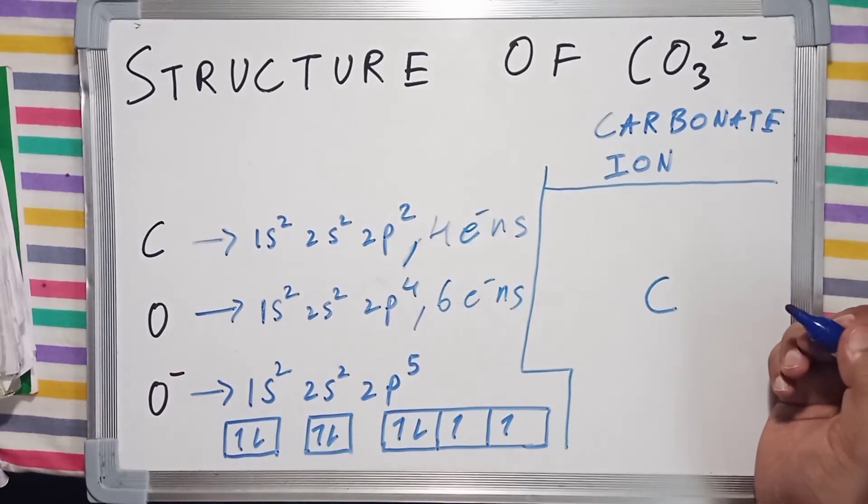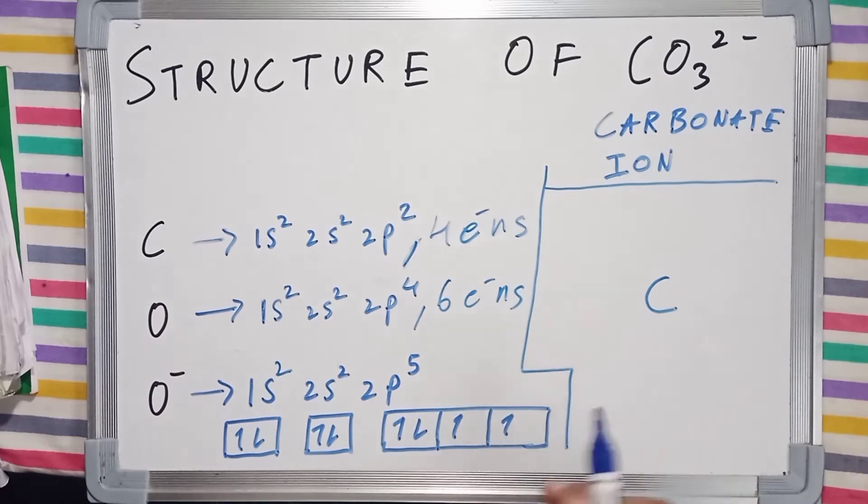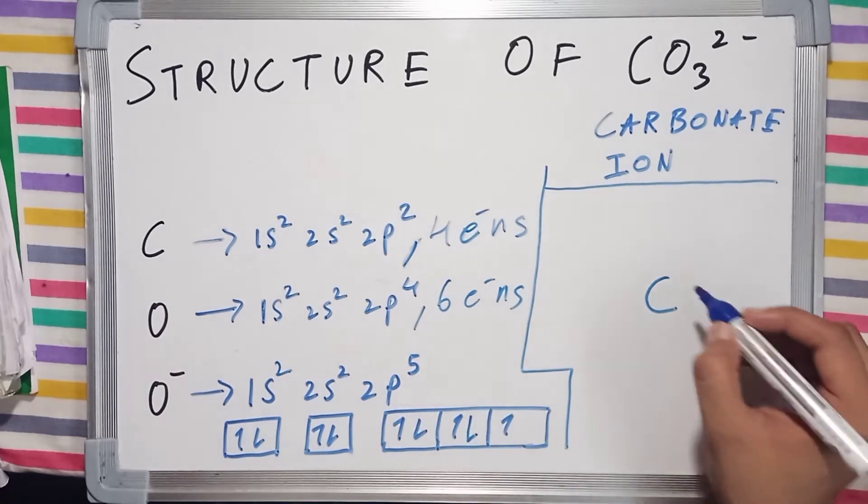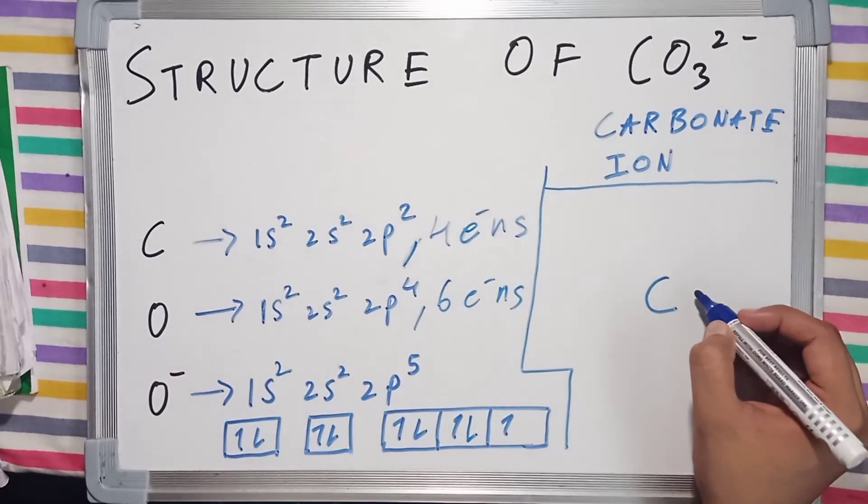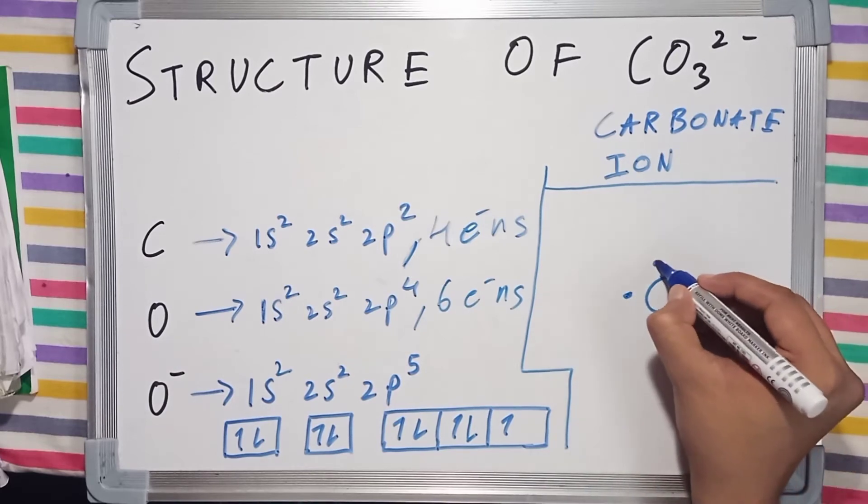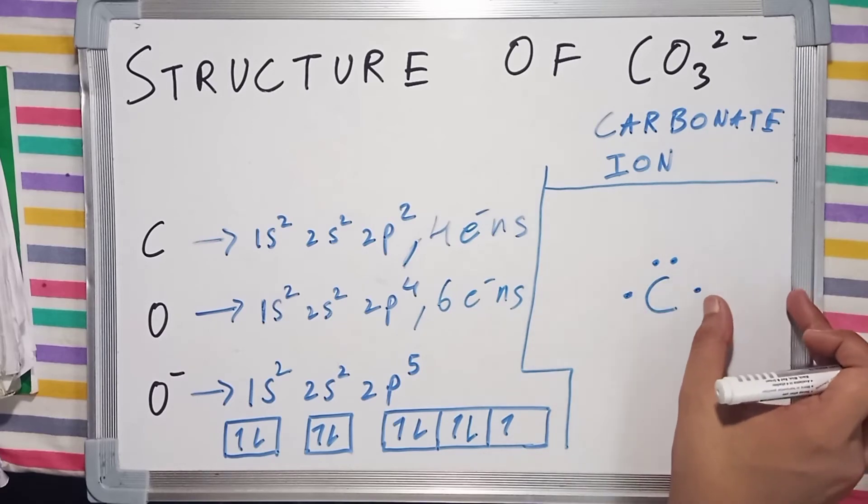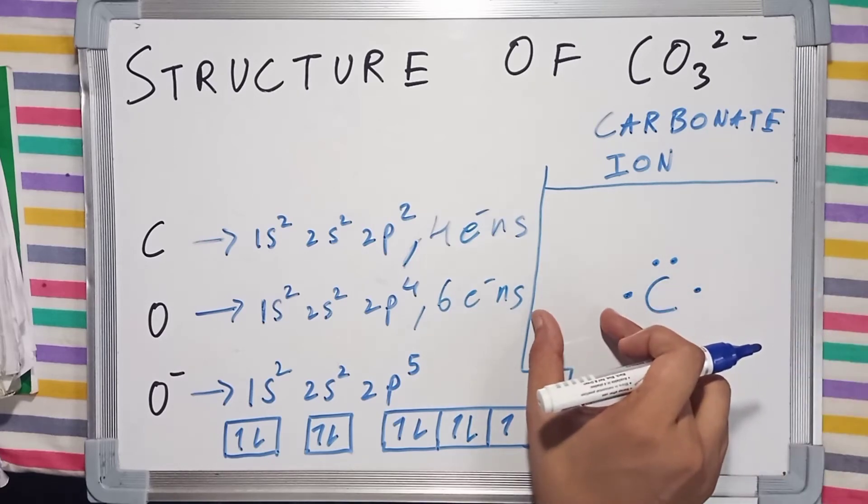Carbon will make 2 single bonds with O⁻. First, I'm going to draw the valence electrons: 1, 2, 3, and 4. Notice how I've placed the electrons. I'm going to make a single bond here and then a single bond here.